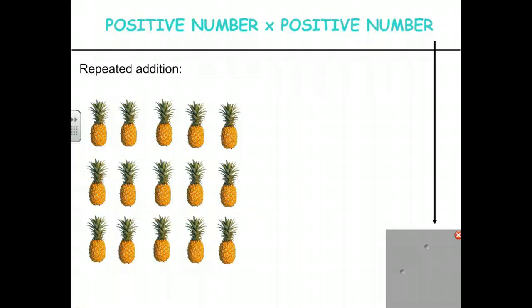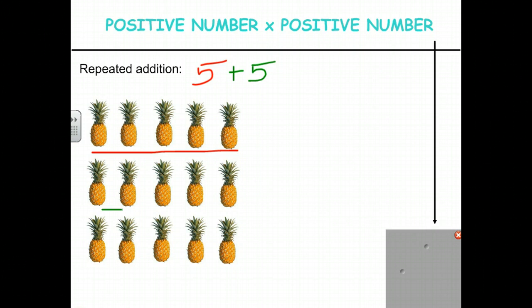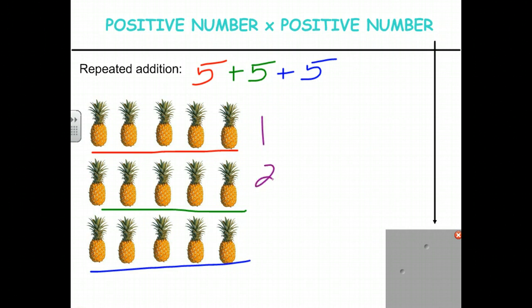That's pretty easy to see with positive numbers because it's something we're very familiar with. In this case we have 3 rows of 5 pineapples. If each row represents a group, we have our first group of 5, our second group of 5, and our third group of 5 — in total, 3 groups of 5 pineapples each.